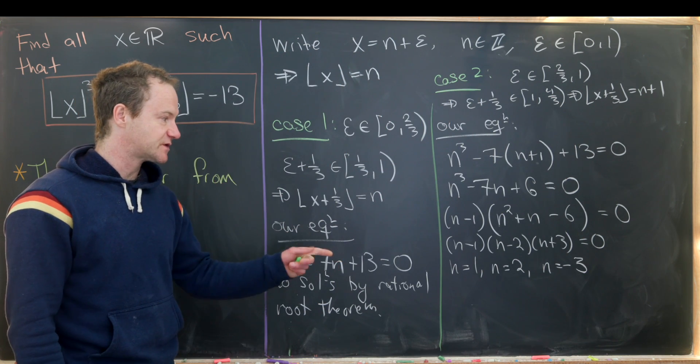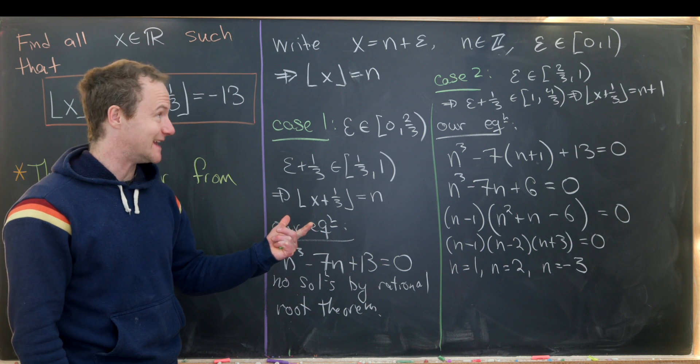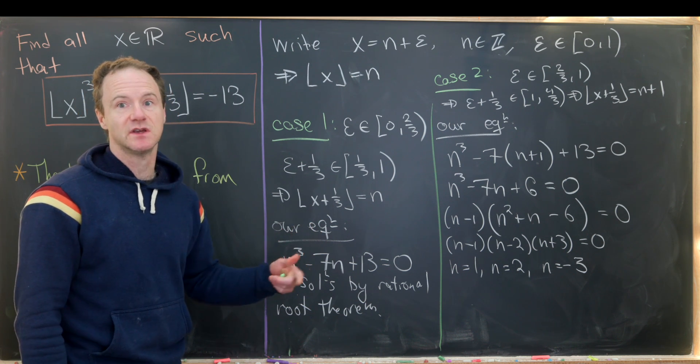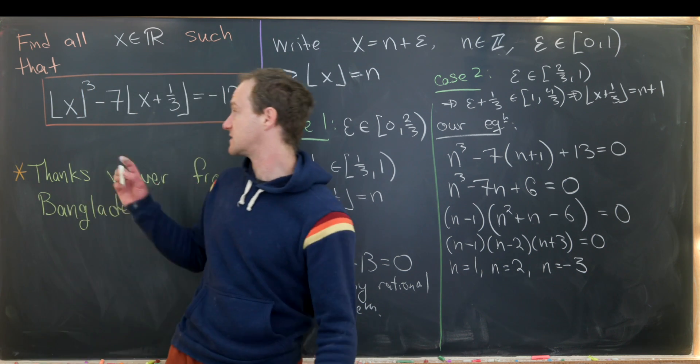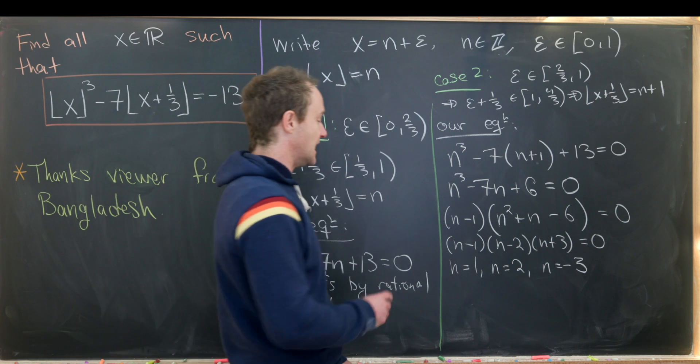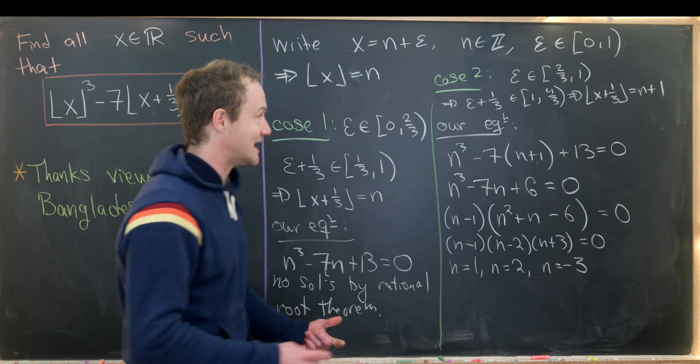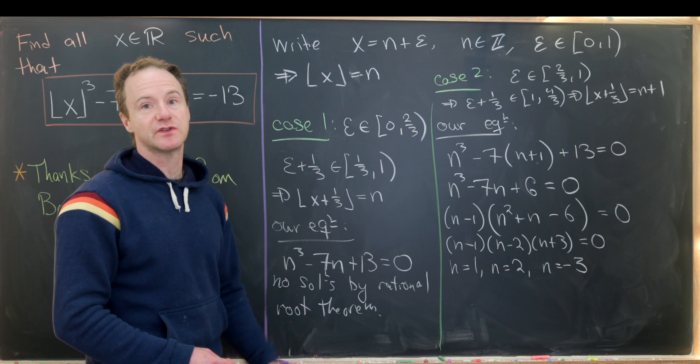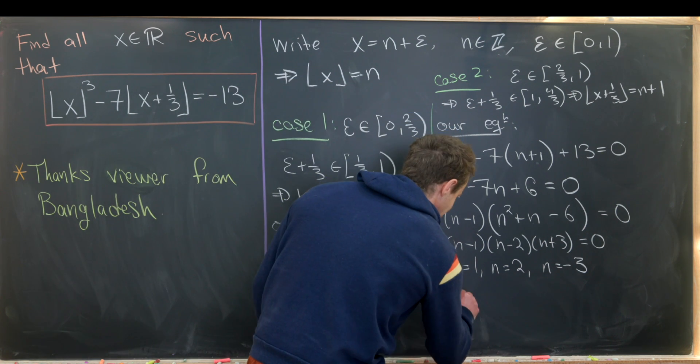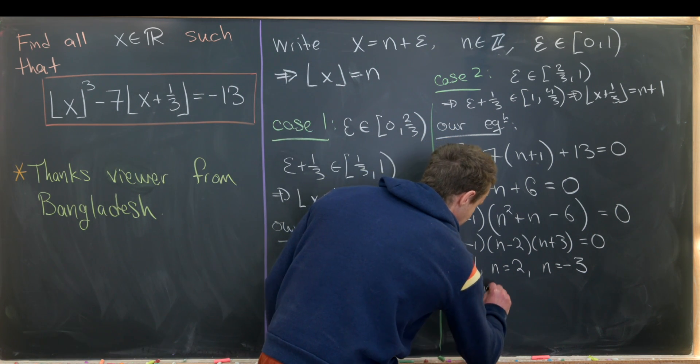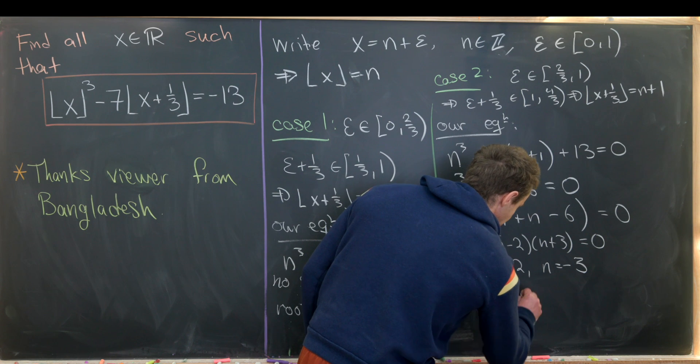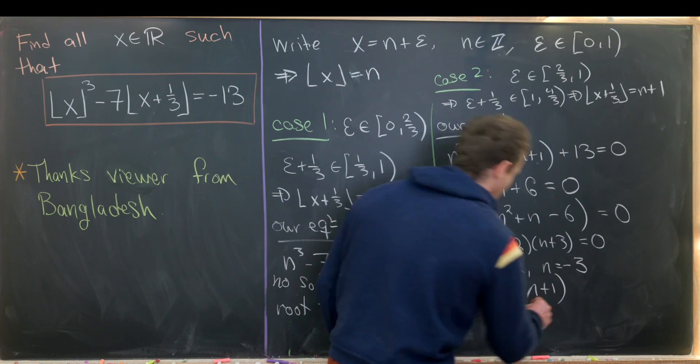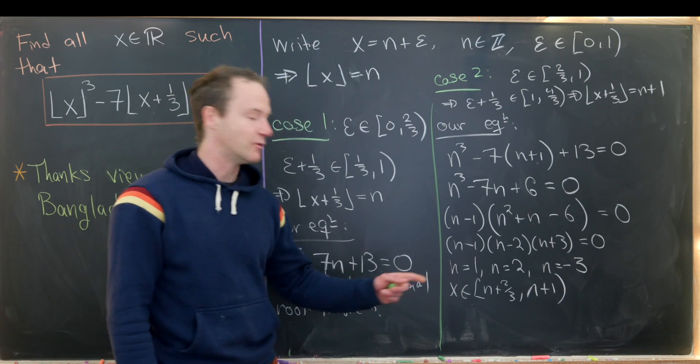But now let's recall that each of those solutions correspond to an interval of solutions in the real numbers because we've got this floor function involved. In fact, if we have a solution n, given the fact that epsilon is between two-thirds and 1, that means x will be between n plus two-thirds and n plus 1 like that. So let's see what we get.